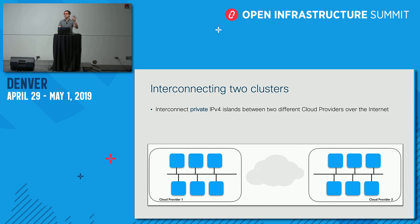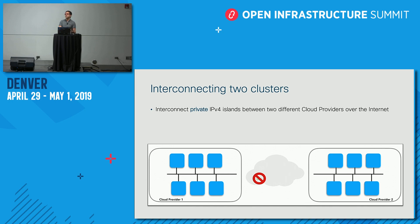You might have two independent clusters — one running on cloud provider one, the other on cloud provider two — or one on your data center because your data is sensitive. For packet forwarding between these two independent clusters, all that's in between is the internet. You'd send a packet that exits your first cloud provider... and then it gets dropped.